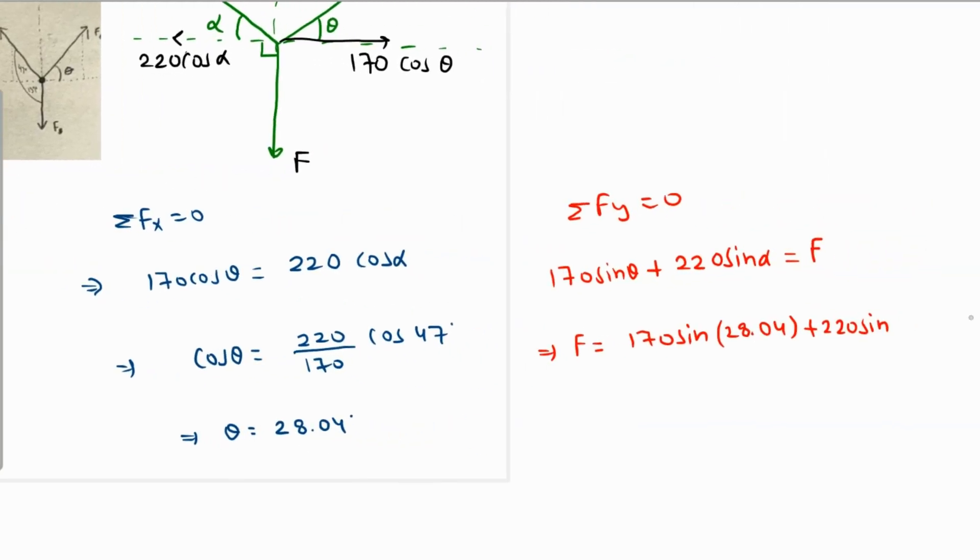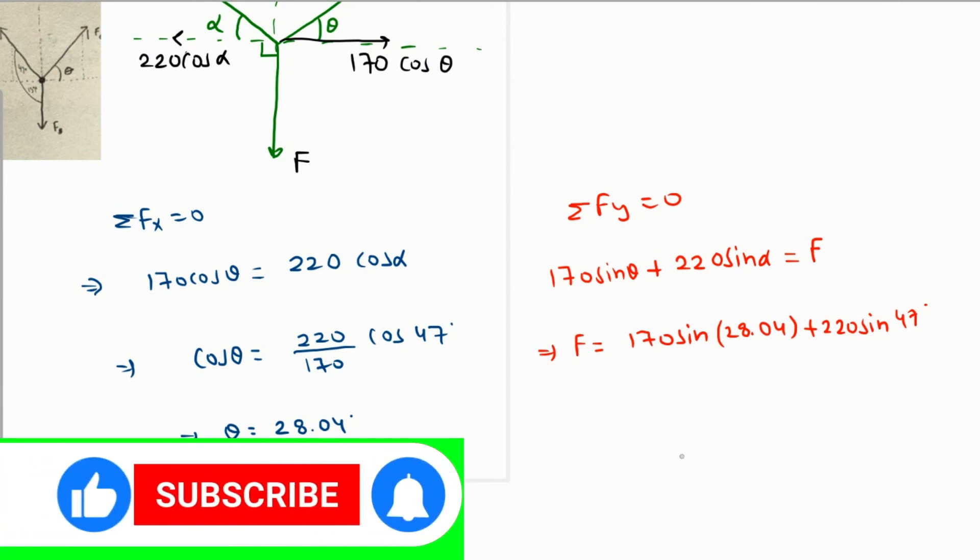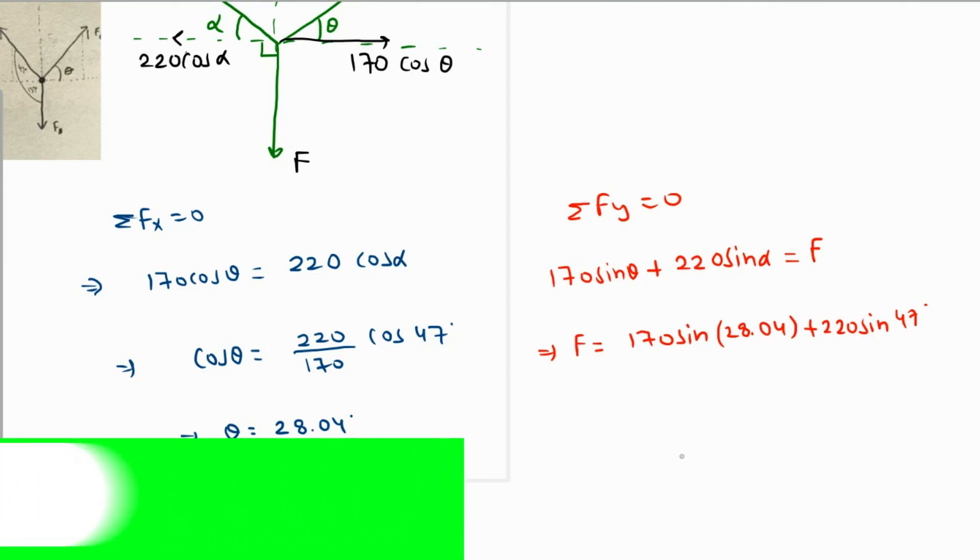All we have to do is find this up using the calculator, of course. The sine of this times 170 plus 220 times sine of 47. Make sure your calculator is actually in degree mode because every angle is in degrees. This is coming as 240.82 Newtons, that is the force of Betty.